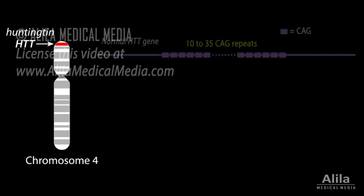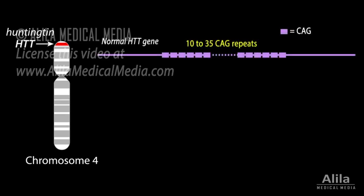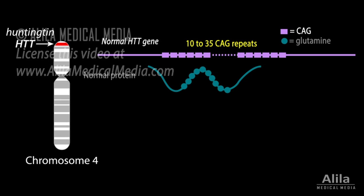The disease is caused by an abnormal version of the gene Huntington, or HTT. The normal HTT gene has a stretch of 10 to 35 repeats of CAG nucleotide triplets, which encode for the amino acid glutamine.